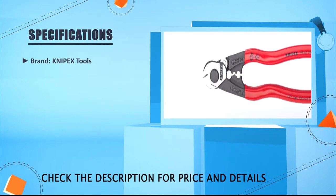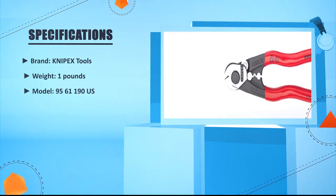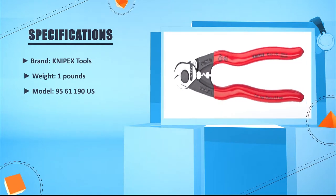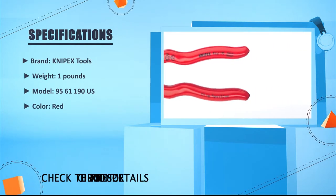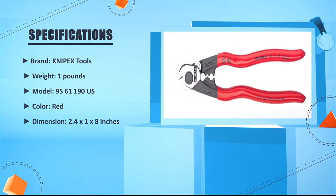Brand: Knipex Tools. Weight: 1 pound. Model: 95-61-190 US. Color: Red. Dimension: 2.4 by 1 by 2.8 inches.